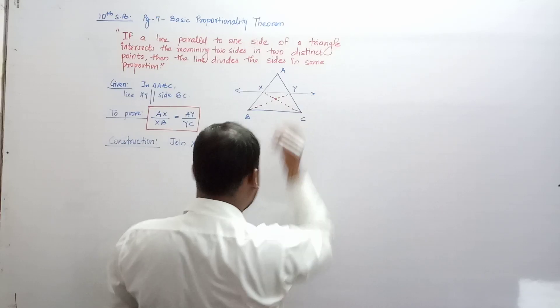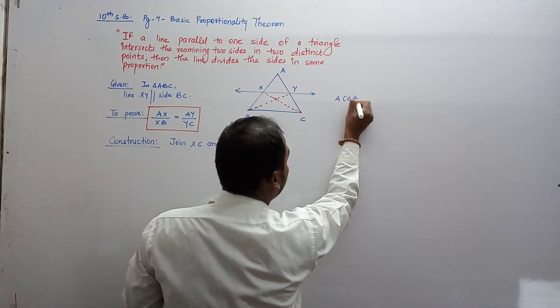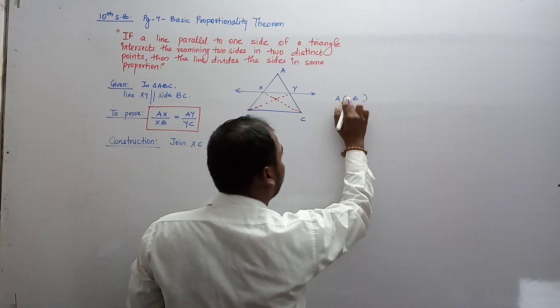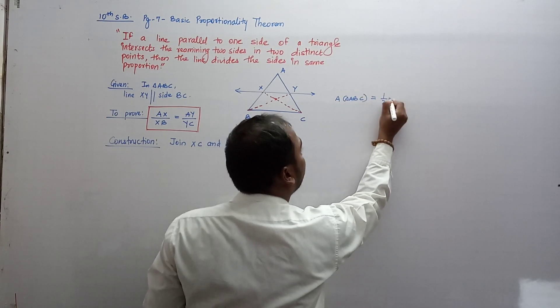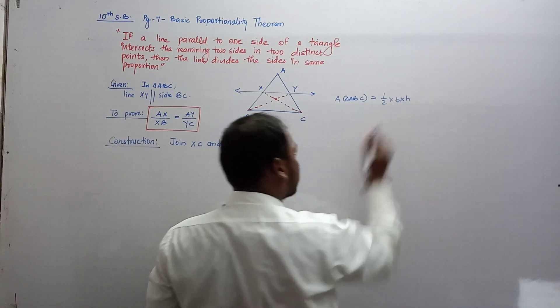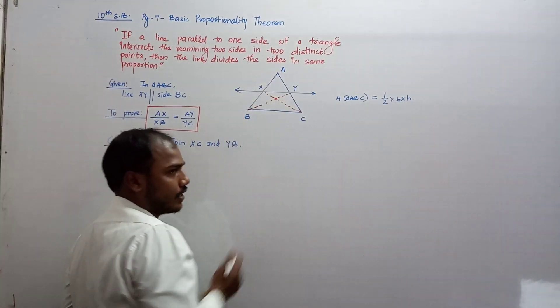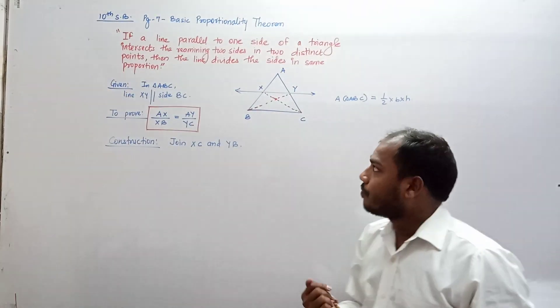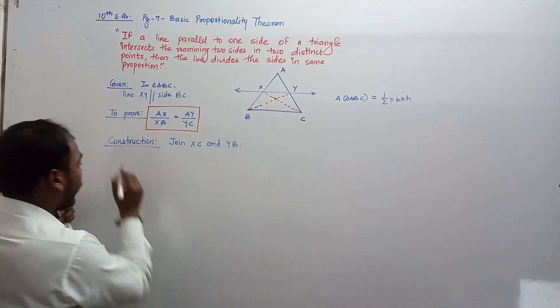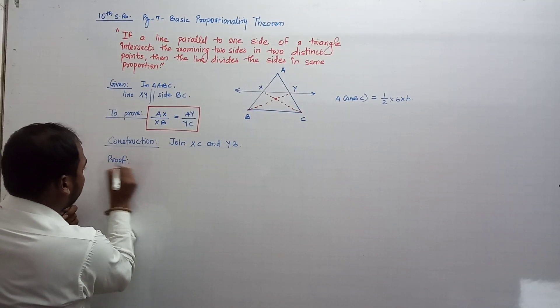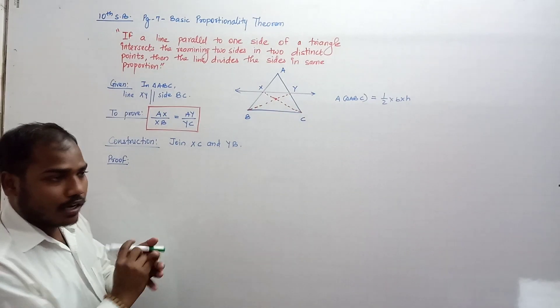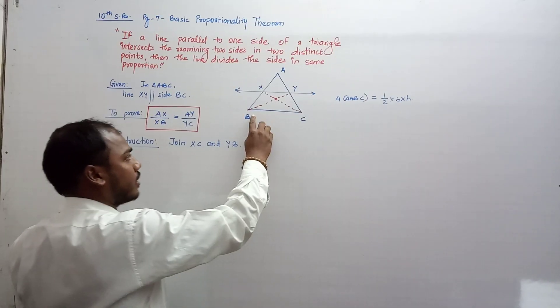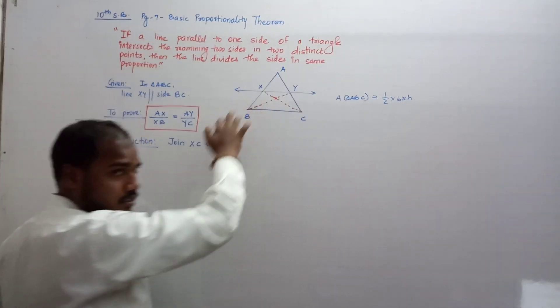We will use the area of triangle formula: area equals half into base into height. We will complete this theorem in three steps. We start the proof using what is given — triangle ABC with XY parallel to base BC — and the construction that we joined BY and XC.